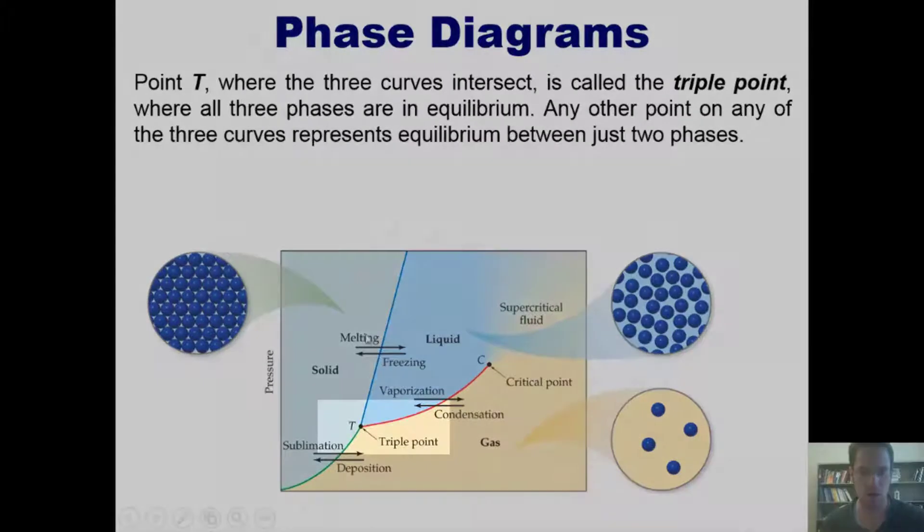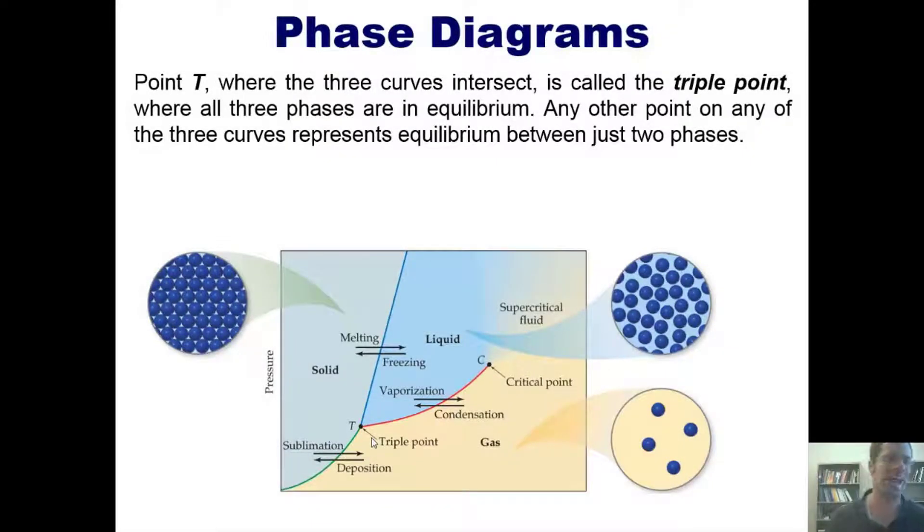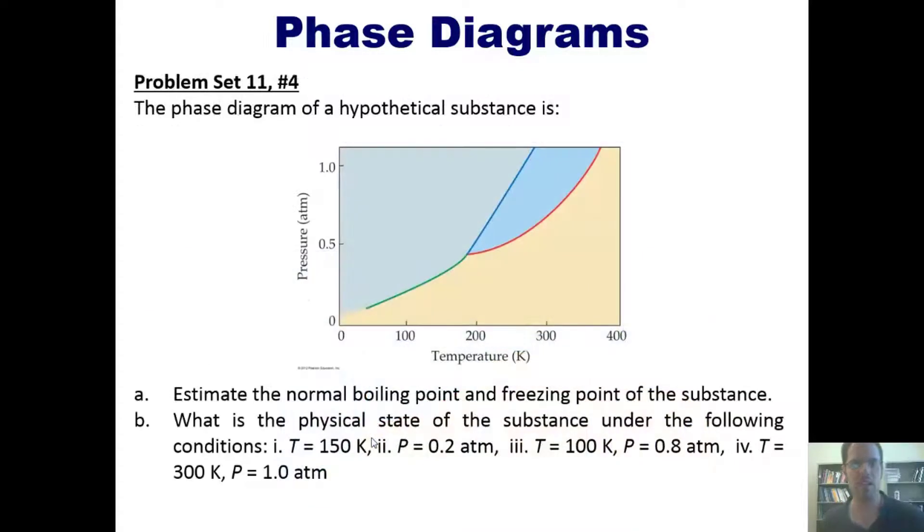Point T right here, where all of the curves intersect, is called the triple point where all three phases are in equilibrium. Any other point on any of the three curves represents an equilibrium between just two phases. I realize that this might be unclear. Let's take a look at a problem. The phase diagram of a hypothetical substance is shown here.